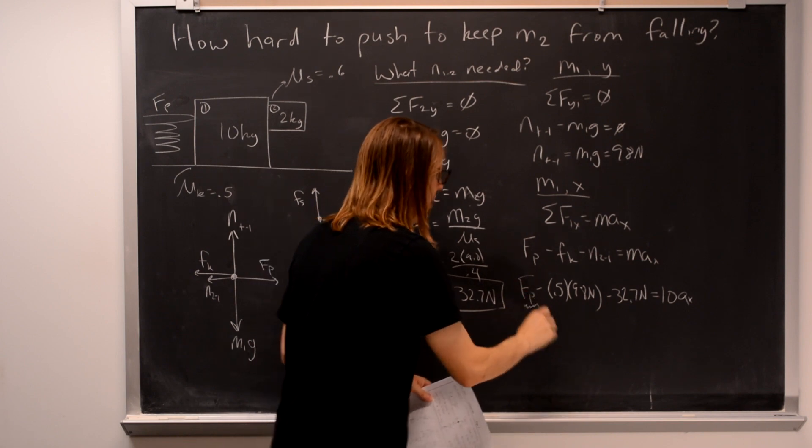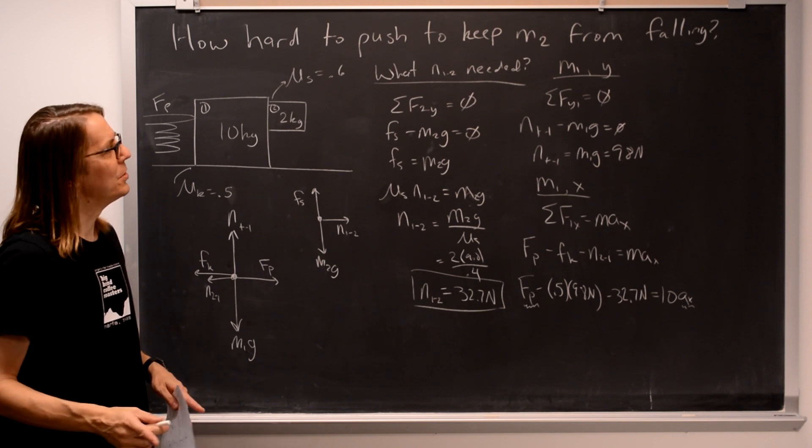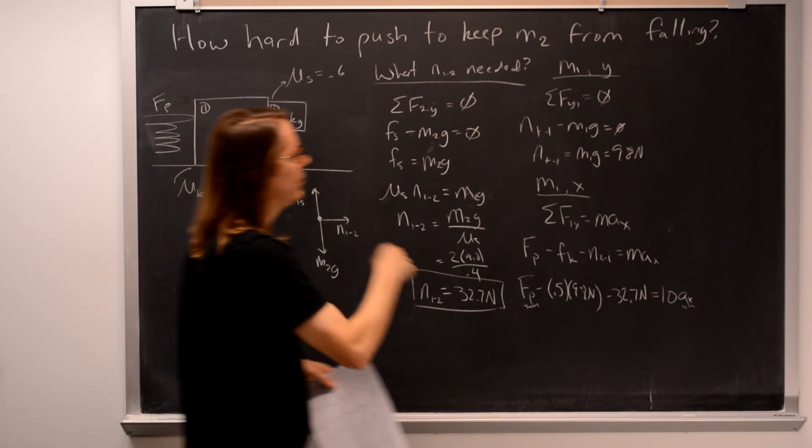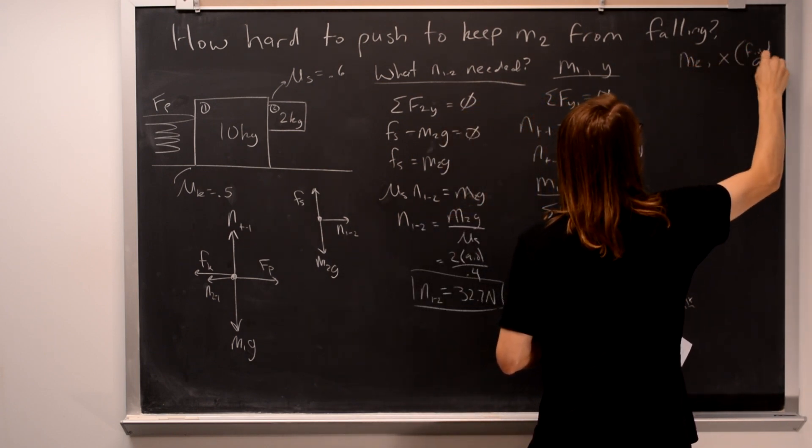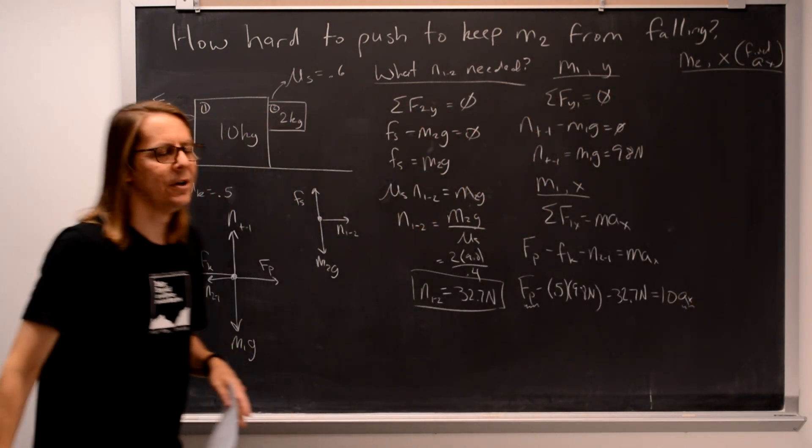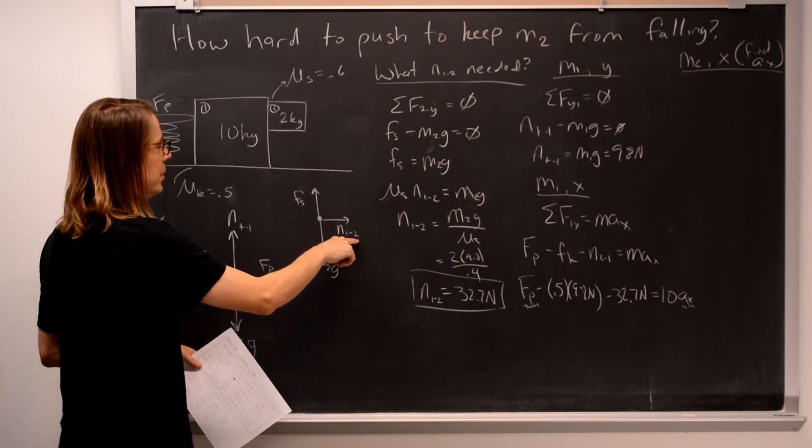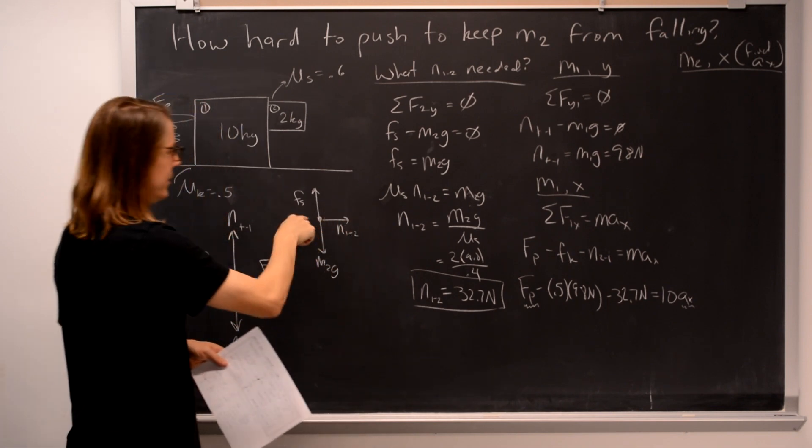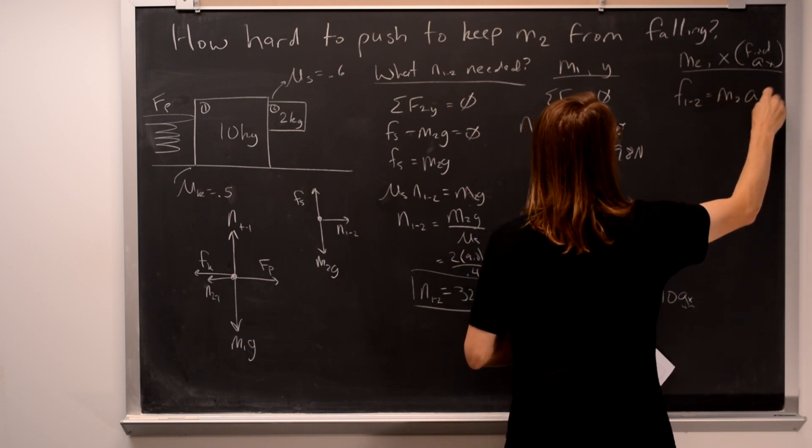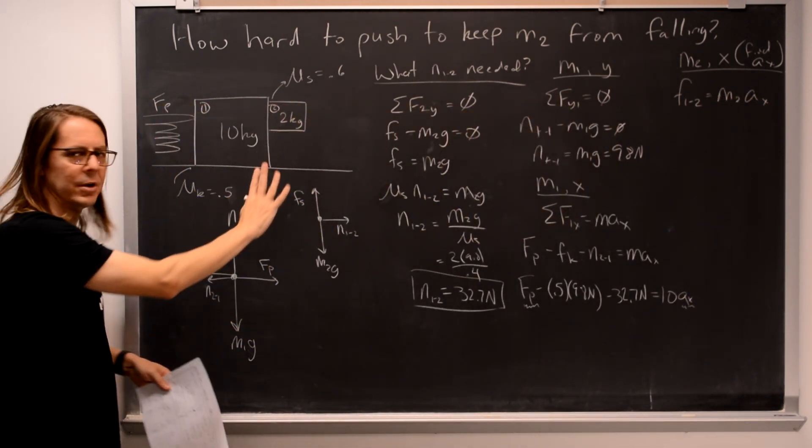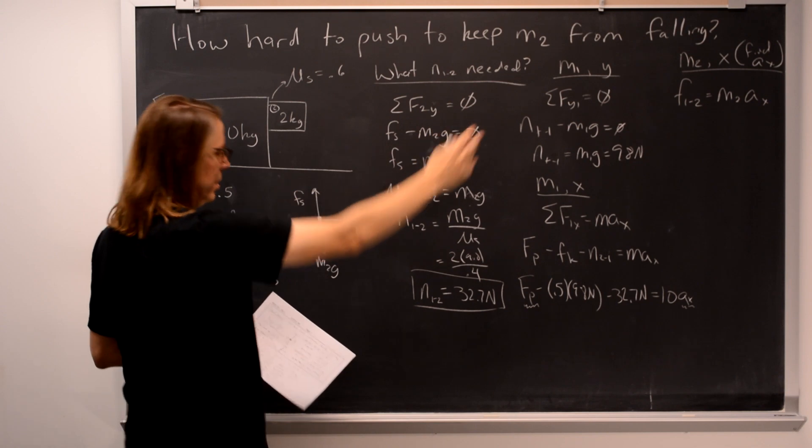But we do have one more equation we could do. We could have done one more thing with the 2. We could go back to m2 and get the x in order to find the acceleration in the x. We actually did all the work, but now we just have to finish it off.